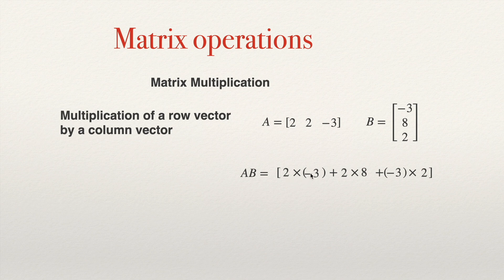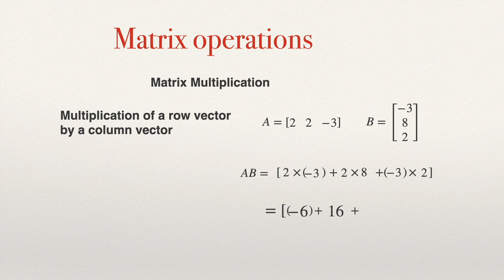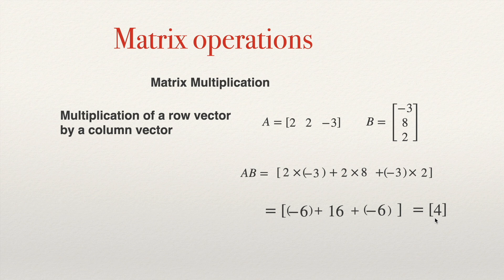We have 2 multiplied by minus 3, which is negative 6, plus 2 multiplied by 8, which is 16, plus negative 3 multiplied by 2, which is again negative 6. So negative 6 plus negative 6 is negative 12, plus 16 gives us 4. So the result is a matrix whose unique element is 4 — a one-by-one matrix. When you multiply a row vector by a column vector, you always obtain a number, or better, a matrix with only one component.